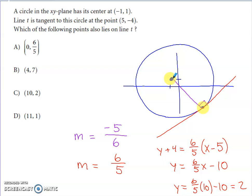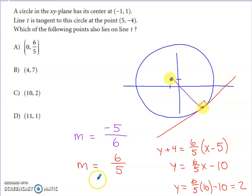I can find the slope of the radius (the purple line): going from the center down 5 units and right 6 units gives a slope of −5/6. Since the tangent line must be perpendicular to the radius, its slope is the opposite reciprocal: 6/5. The tangent line passes through (5, −4), so I write the point-slope form of the tangent line's equation using slope 6/5 through that point.